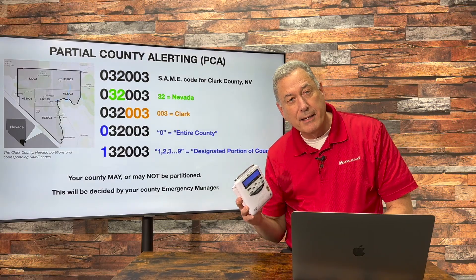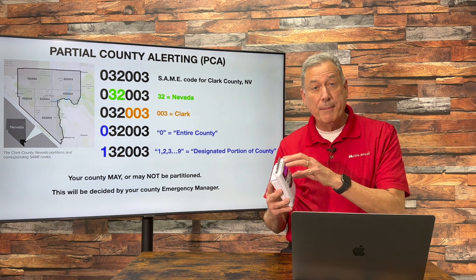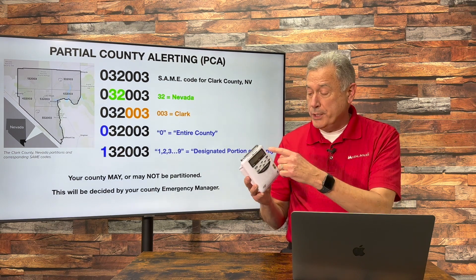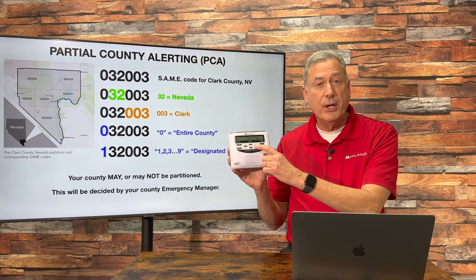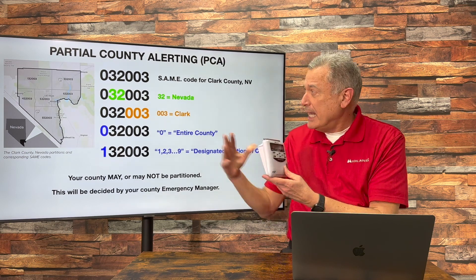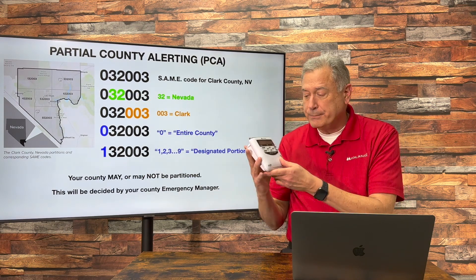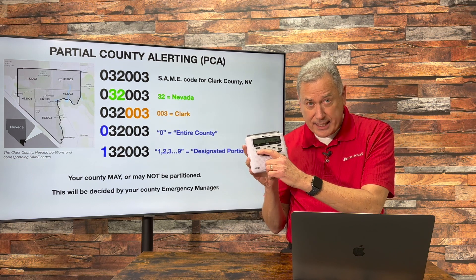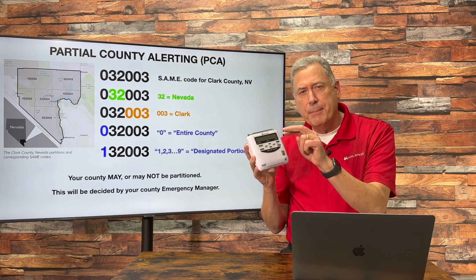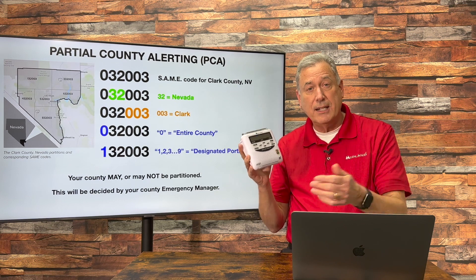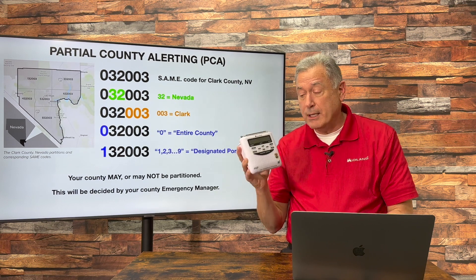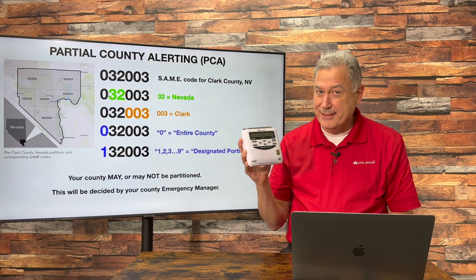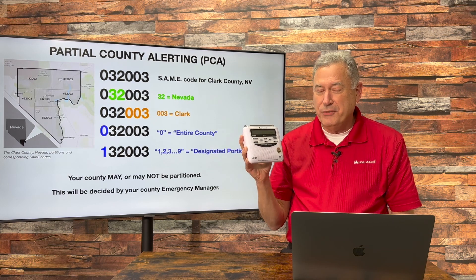It's as simple as that. Program in your county the regular way — Clark County, Nevada. When you bring it up again, press the right arrow. That'll allow you to adjust the first digit. Once you've adjusted that first digit, hit select to save it. Then hit the menu button twice to do a final save on everything. This radio has now been set to only go off for a portion of Clark County, Nevada.